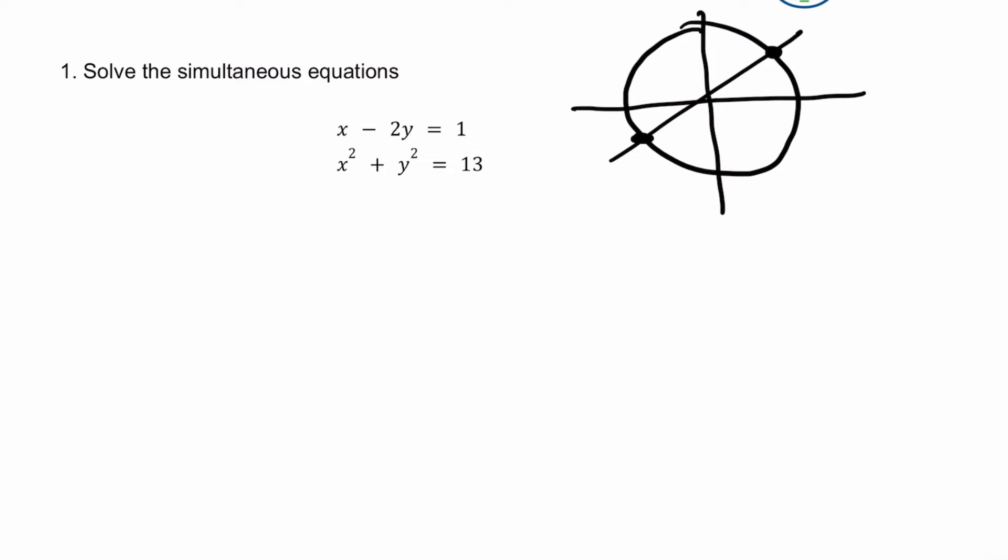So rather than having x minus 2y equals 1, I'm going to make x the subject, and I'm going to change that to x equals 1 plus 2y. So it's exactly the same equation, but I've just changed it to make x the subject.